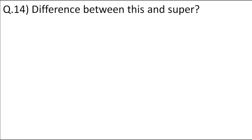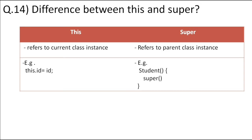What is the difference between the this and super keywords in Java? The this keyword refers to the current class instance — whenever we want to access members of the same class, we use this. For example, inside a constructor, we assign values to current class variables using this. But super is used for the parent class instance — inside a constructor, if we want to call the superclass constructor, we write the super keyword and it calls the parent class constructor.